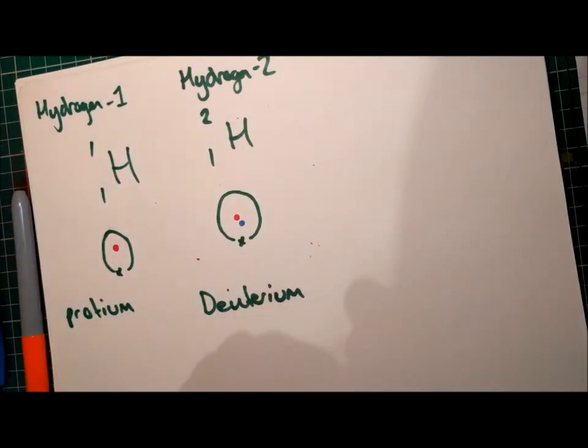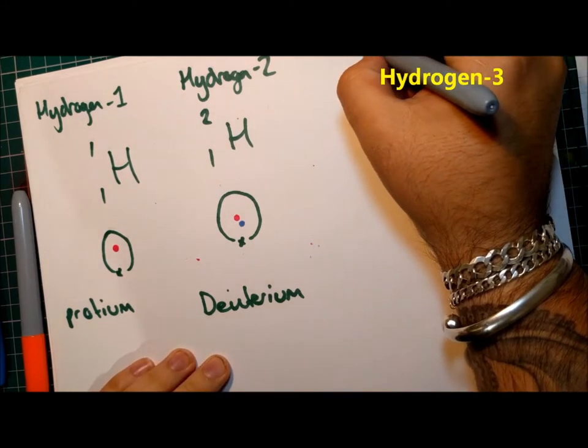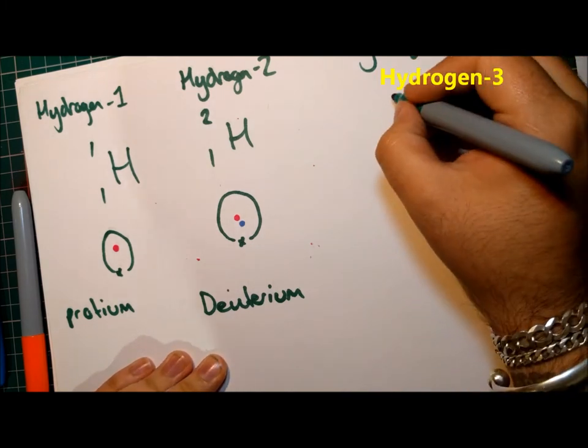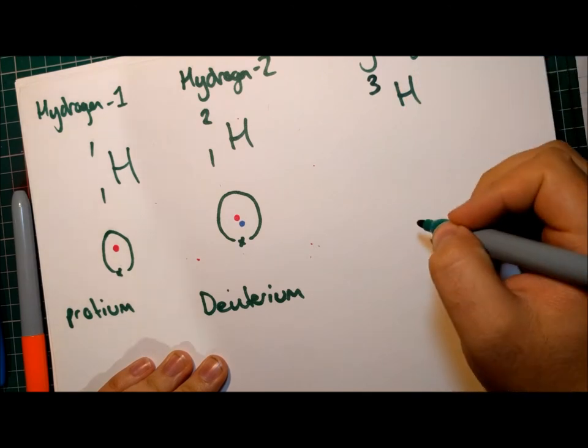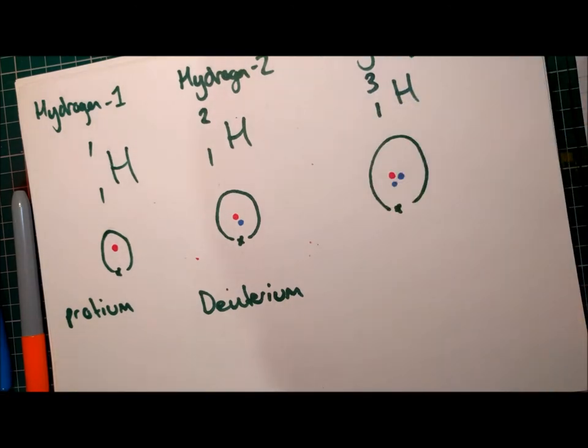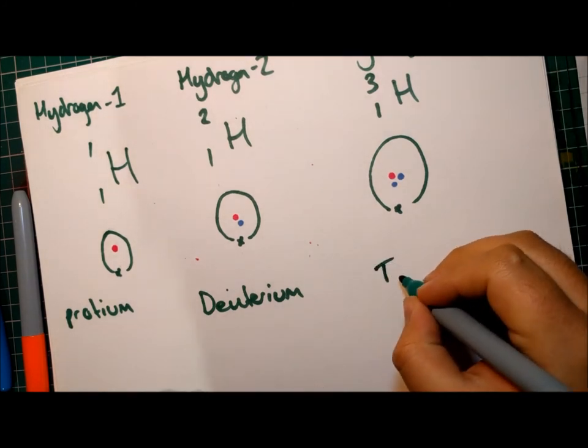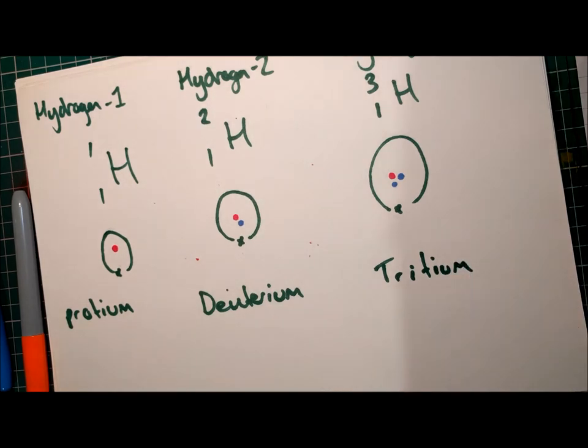And if we were to draw this one, at least there's a third isotope of hydrogen. I think you can guess it, it's going to be called hydrogen 3. It has a mass of 3 and 1 proton. And this one is called tritium, which again you can see the pattern in the names there. Tri, triple, triad, means 3.